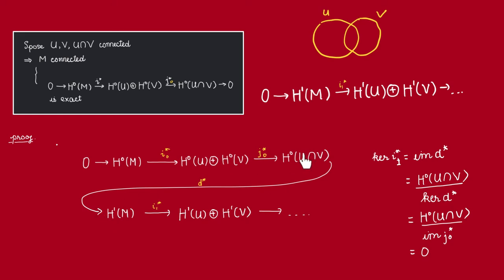But now by exactness here, we know that this kernel is going to be equal to the image of J0. So in other words, this quotient is the cokernel of this map J0, which must be trivial because of exactness here. This must be trivial because J0 is surjective. So this image is the full H0 of U intersect with V. And thus, we know this map is injective, and so we can start our long exact sequence at the level H1 as follows.